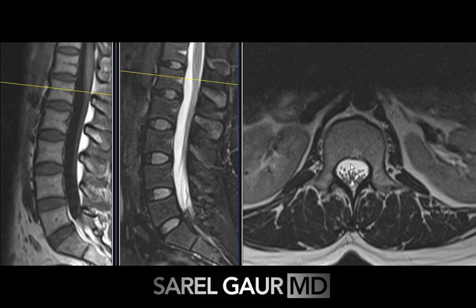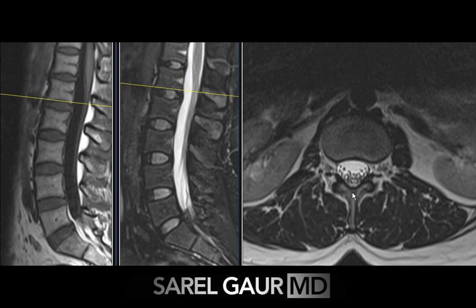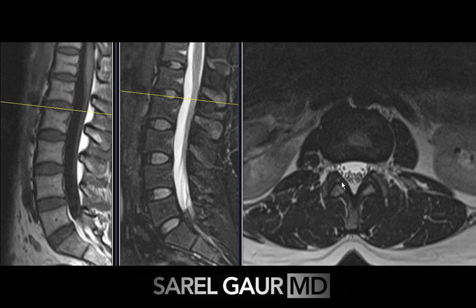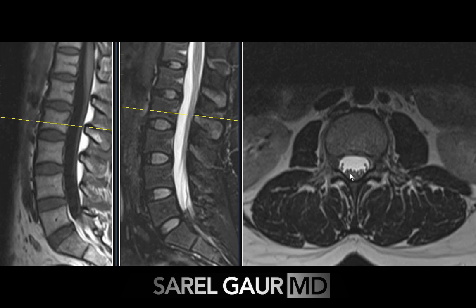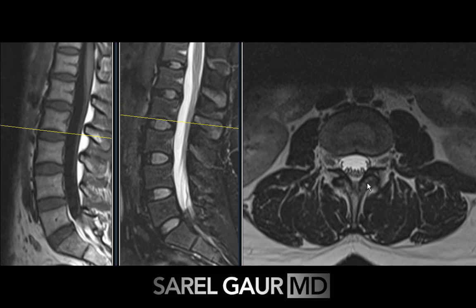Then I basically look at the nerve roots on the axial. As I trace these nerve roots down, they should be fairly separate from one another, floating in the CSF sac. There shouldn't be any evidence of arachnoiditis or inflammatory process involving these nerve roots.